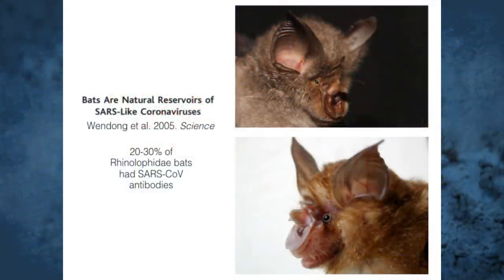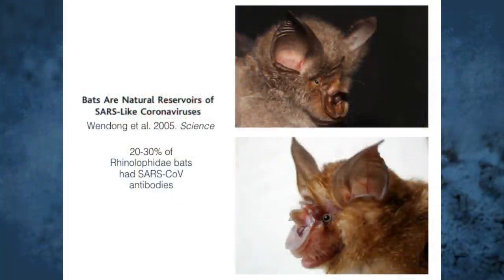You have to go back a hundred years to see something similar in human history. The virus that causes COVID-19 is called SARS coronavirus 2. It's SARS coronavirus 2 because it's so similar to a virus that emerged in 2002 and caused about a thousand deaths worldwide before the world snuffed it out through quarantining and testing for fevers at airports. These viruses are natural viruses of bats, in particular horseshoe bats.